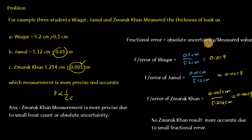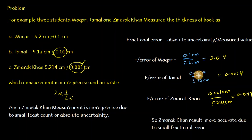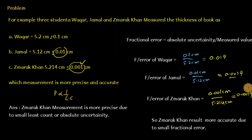For accuracy, fractional error equals absolute uncertainty divided by measured value. Fractional error of Waqar: 0.1 divided by 5.2 equals 0.019. Fractional error of Jamal: 0.01 divided by 5.12. Fractional error of Zmarag Khan: 0.001 divided by 5.21, which gives approximately 0.00019. The minimum fractional error belongs to Zmarag Khan, so his reading is both the most precise and most accurate.